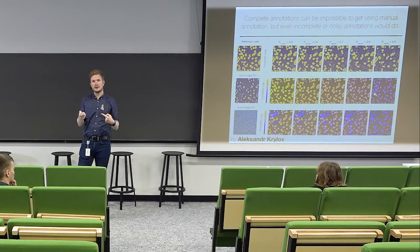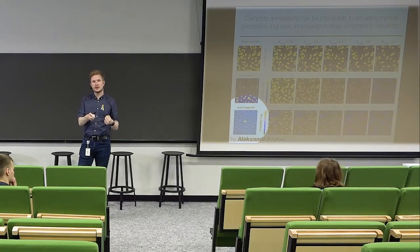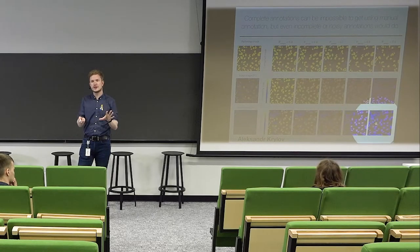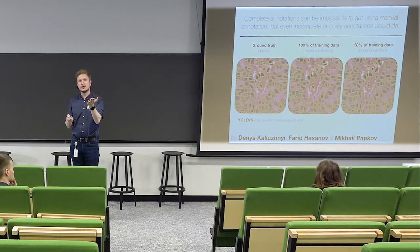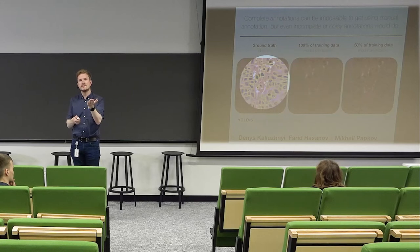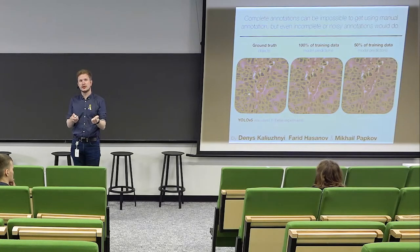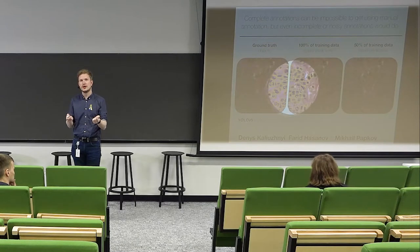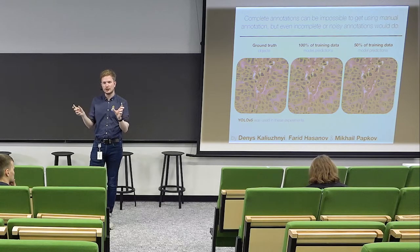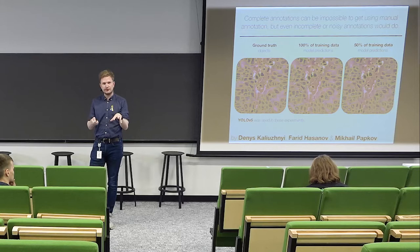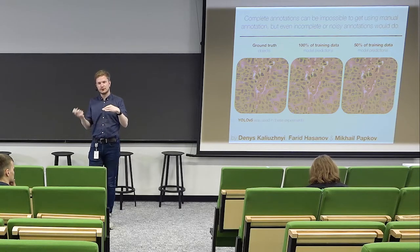This was quite surprising even for complex BrightField images. Even with half of your annotations, you might end up with nice results. The same was observed under histology slides — these are different kinds of images, and this was about object detection. The green boxes are objects. The model trained on 100% of the data and the model trained on 50% of the data are very close in performance.